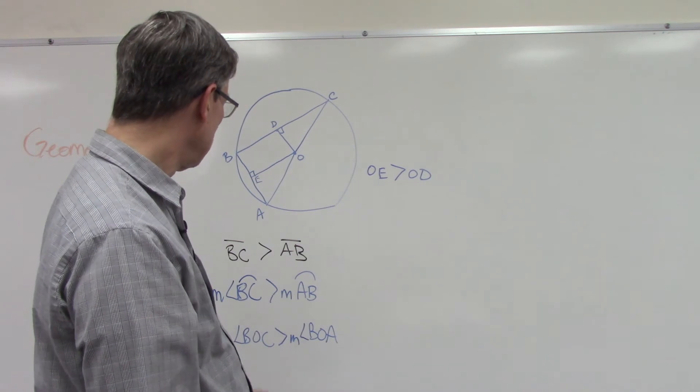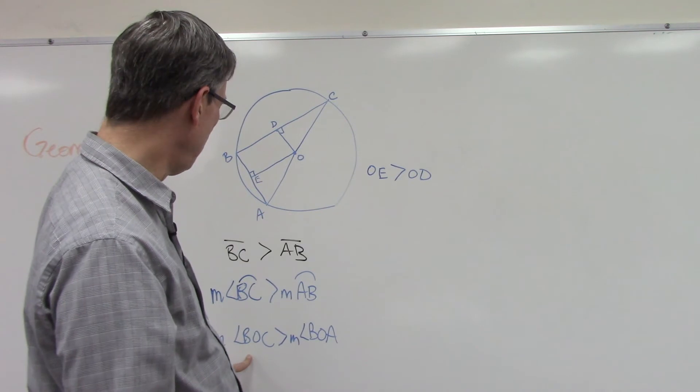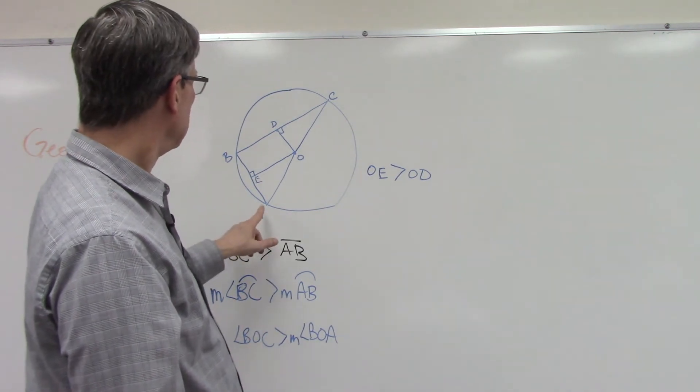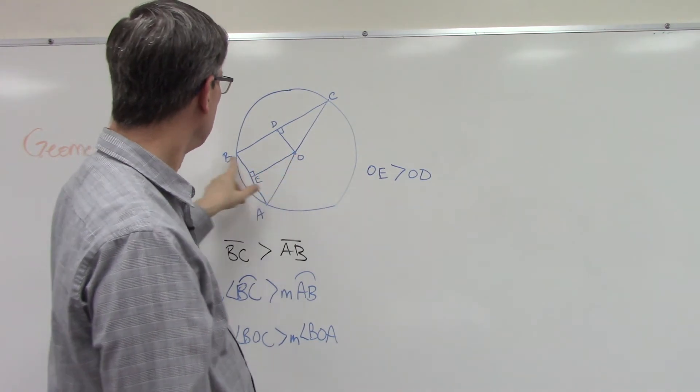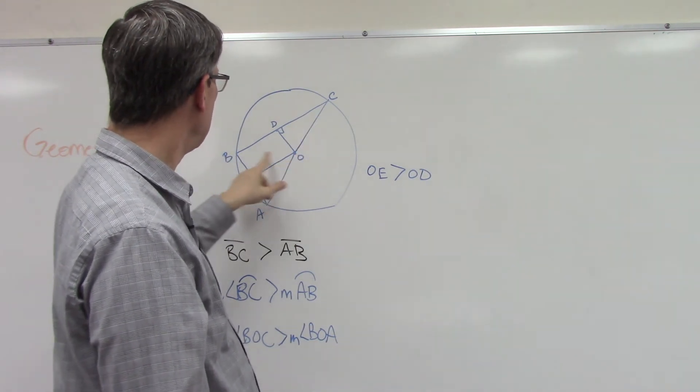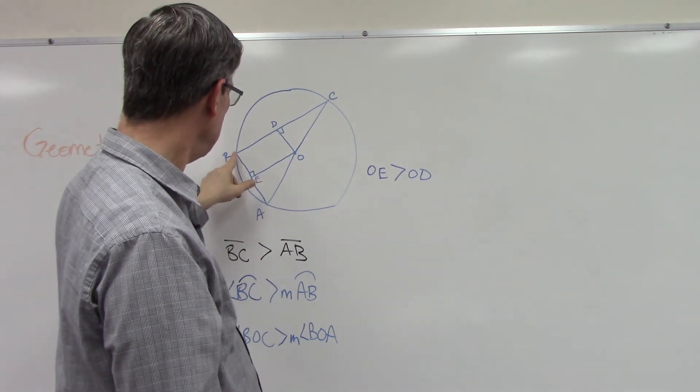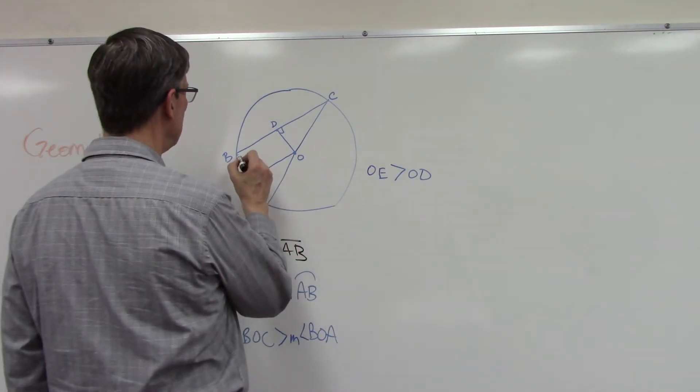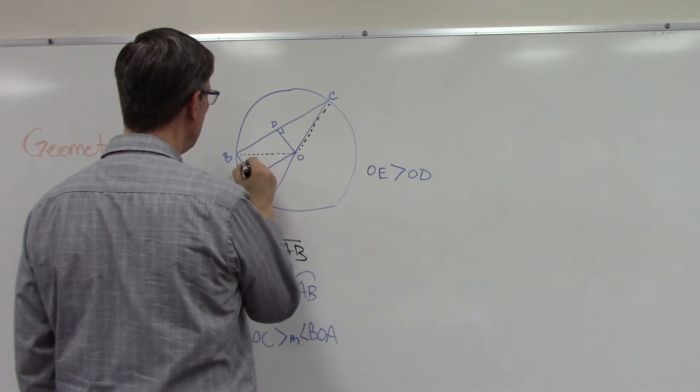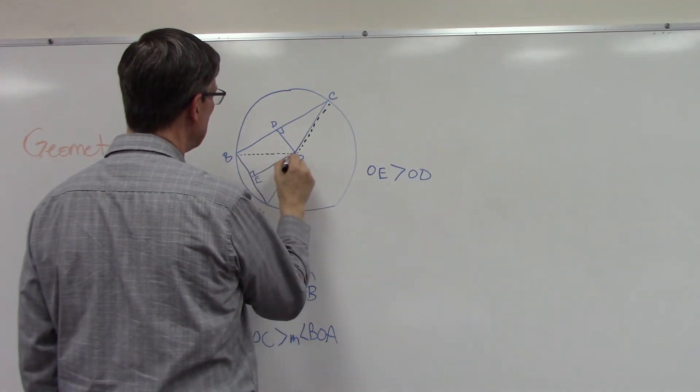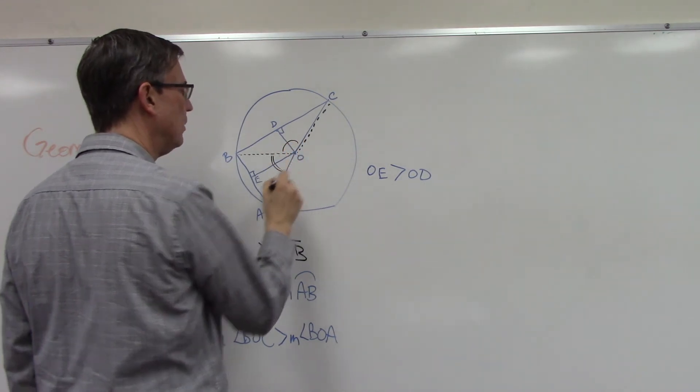Theorem 79 says if two chords are not congruent, the longer chord determines the larger arc. What's the last thing we're trying to prove? We're trying to prove that angle BOC has to be greater than BOA.